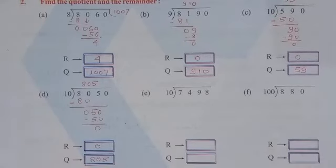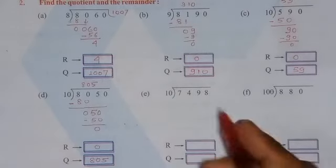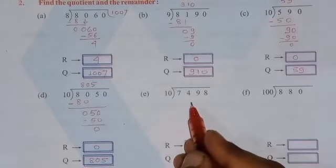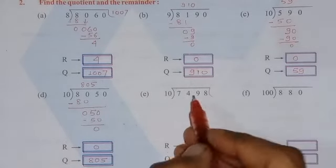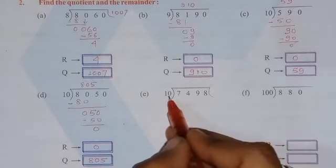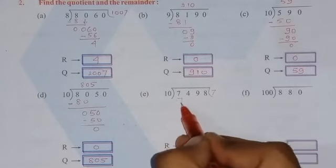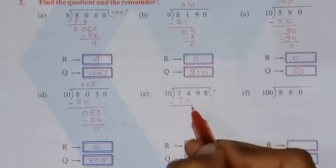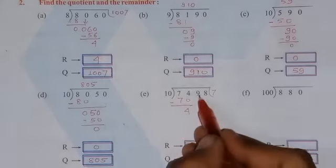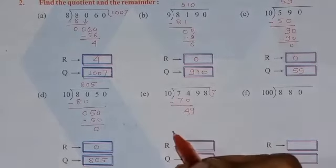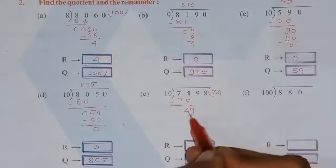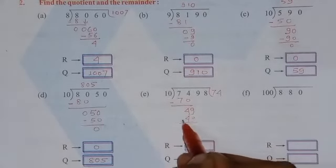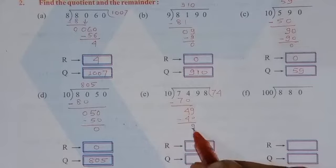In the next question, we have to divide this number that is 7, 4, 9, 8 by 10. So we will divide this number. First of all 74 divide by 10. So 10 7's are 70. Now subtract this, you will get 4. Now write down 9 with this digit. Number is 49. So divide by 10, 4 times. 10 4's are 40. Now subtract this, you will get 9.